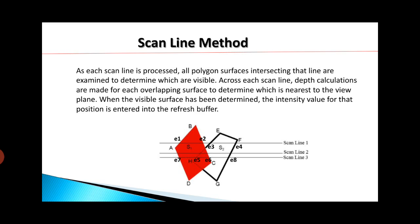Now let's see scan line 3. It is intersecting the edges of the polygons at E7, E5, E6, and E8. If we see the portion from E7 to E5, that portion is completely inside polygon S1. Therefore, that portion is displayed with the color of polygon S1. But if you see the portion from E5 to E6, that portion is in polygon S1 as well as polygon S2. So here the question arises: what will happen to E5 to E6?